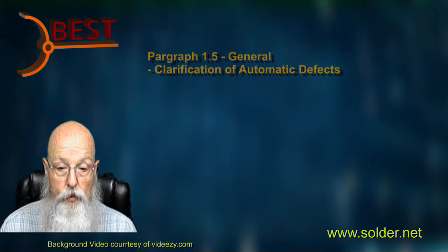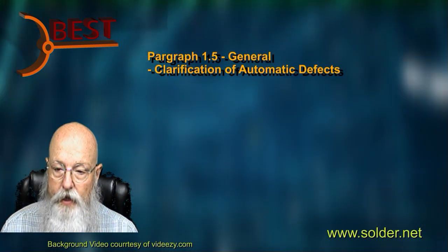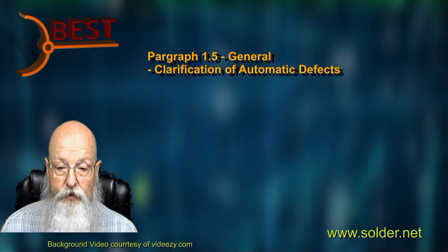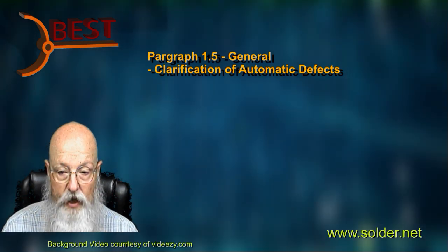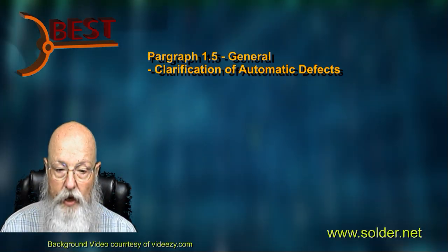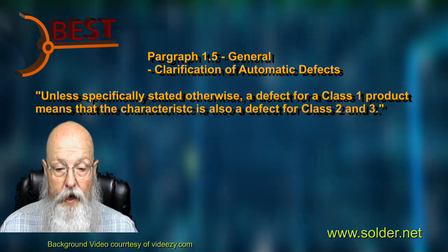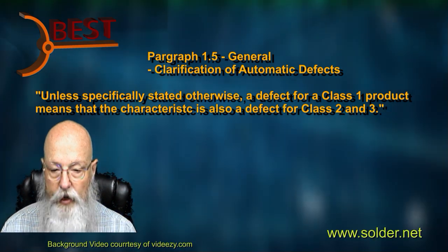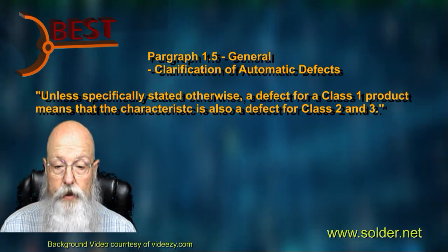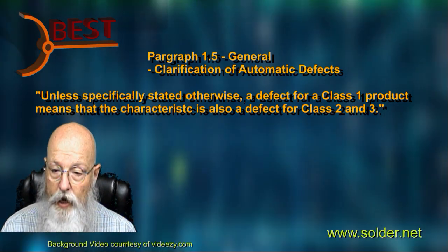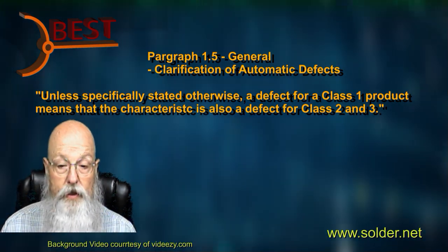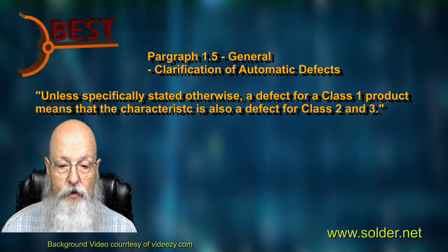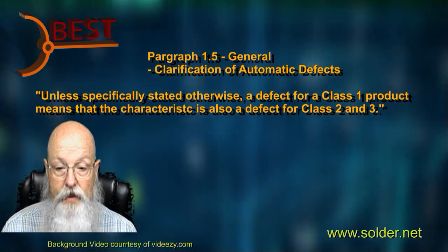Moving to paragraph 1.5, there is an update that slightly modifies the automatic defects. Previously, it was stated that a defect for Class 1 is a defect for Class 2 and Class 3, and a defect for 2 is automatically a defect for Class 3. The updated criteria adds 'unless otherwise stated.' This small change reinforces the concept that customer contracts, drawings, and engineering documentation always take precedence over the standard. The customer should get what the customer wants, even if it conflicts with the standard, when the conflicting desire is documented.